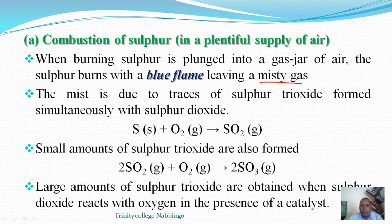The sulfur trioxide formed is responsible for the mist that we see. However, the sulfur trioxide is in small quantities, and if we wanted to get it in large quantities, we would need to supply certain conditions — for example, a catalyst, a given pressure, and controlled timing of reactants and products. We shall discuss that later when we talk about the contact process.